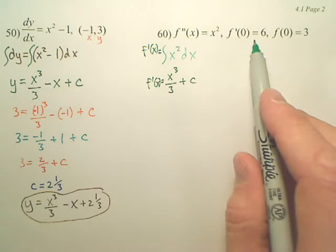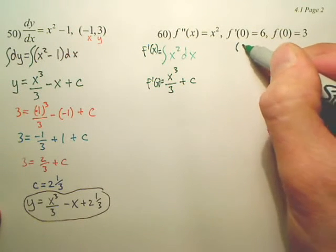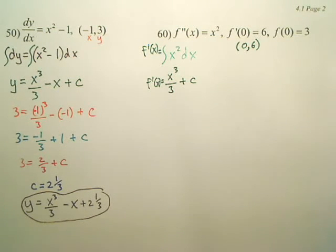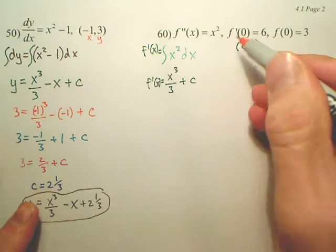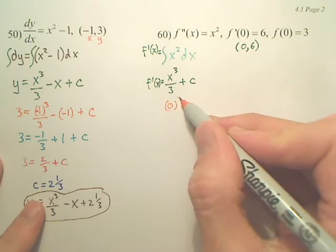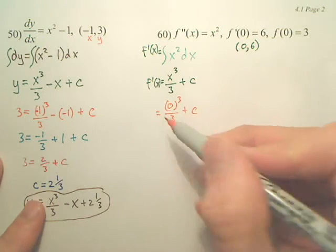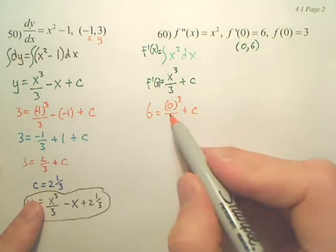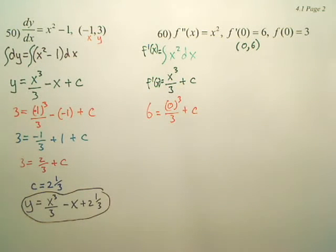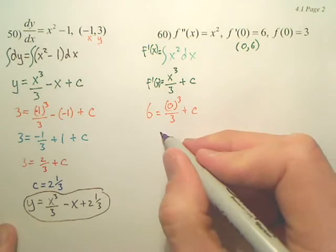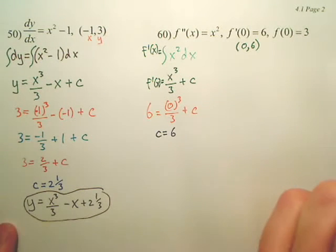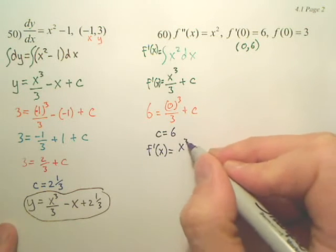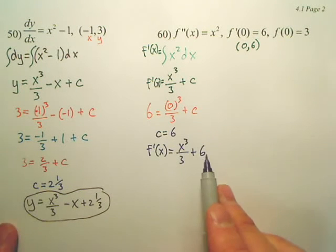Do we have some info here? Isn't this a coordinate — 0, 6? Can I go and plug in 0 for x, and isn't 6 the output? It's a plug-in x and y kind of idea. So what's c equal? 6. So what we now have is my derivative equation is equal to this plus 6. There's my derivative.